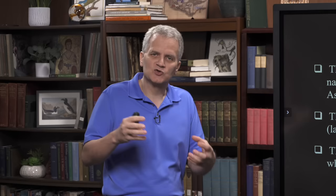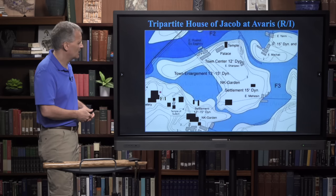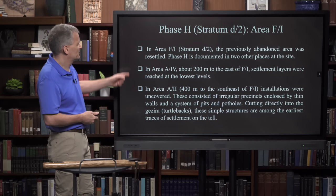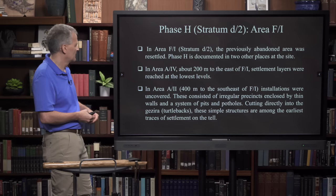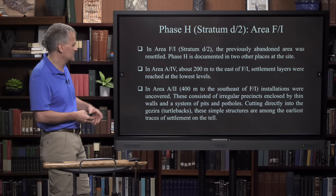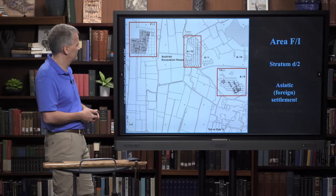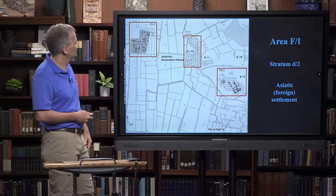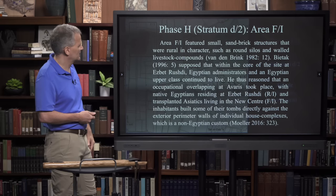That makes better sense because Joseph's family - the people from whom he came - were very simple herdsmen. In Area F1, the previously abandoned area was resettled. Phase H is documented in two other places at the site: in Area A4, about 200 meters to the east of F1, are settlement layers that reach the lowest levels; and in Area A2, installations were uncovered from this same occupational group of Asiatics. The main finds for our purposes are in F1.